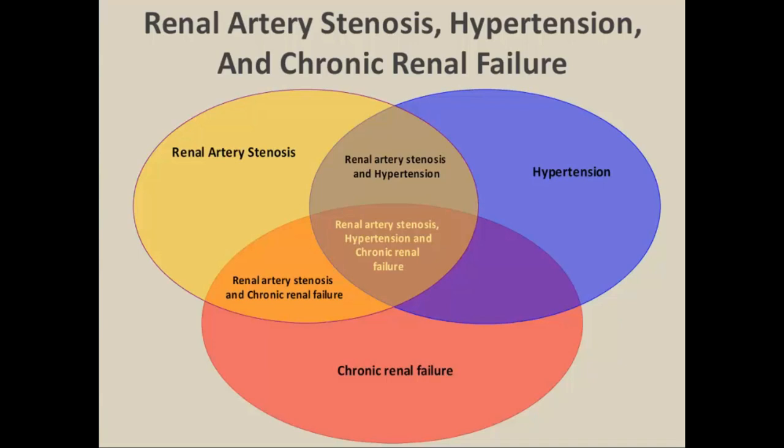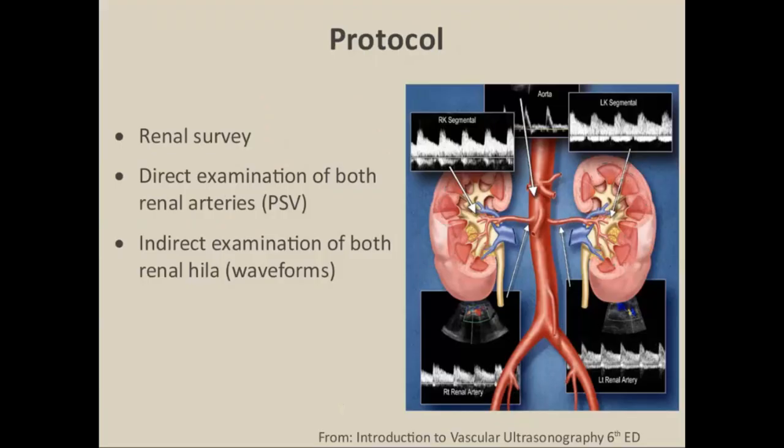Our protocol for evaluation of the renal arteries always starts with a renal survey looking at the kidneys, then we do a direct examination of both renal arteries, determining peak systolic velocities at multiple locations — typically from the origin, proximal, mid, and distal segments. We finish with the indirect exam, evaluating waveforms obtained from the segmental branches within the hilum of each kidney.